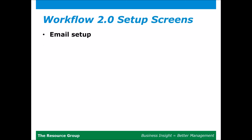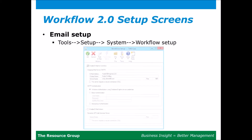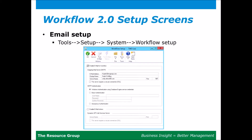I'm going to go over the setup screens for workflow. The first is email setup: go to Tools, Setup, System, and Workflow Setup. Here you check the box to enable email for the workflow, specify your SMTP settings and authentication. If you want to allow approval via email, you also check the box to enable email actions and specify your web services server.